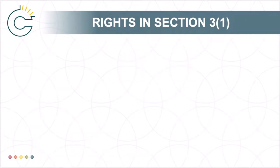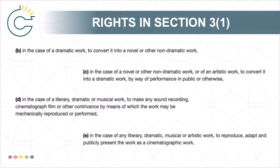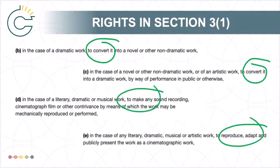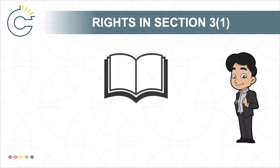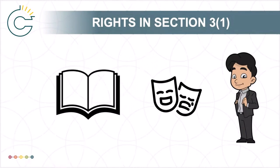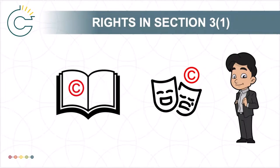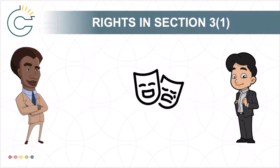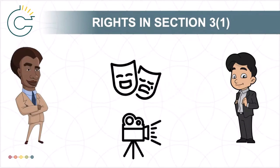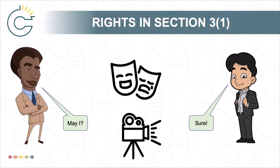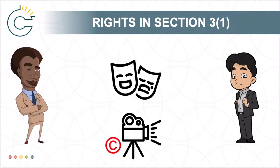Section 3 also includes a number of rights involving changing a work between various types of works. It's important to note that changing a work among types of works will generate new copyright-protected works. For example, if you write a novel, you have the sole right to convert that novel into a dramatic work, like a play. If you were to write the play based on your novel, you would have a new copyright on the written play, as well as the original copyright on the novel. If someone else wanted to take your play and perform it, or turn it into a movie, they would need your permission as the copyright holder, and any recordings of that play or the movie itself would result in new copyrights.